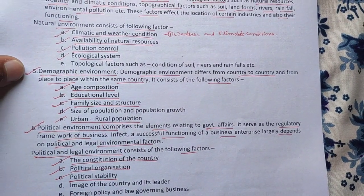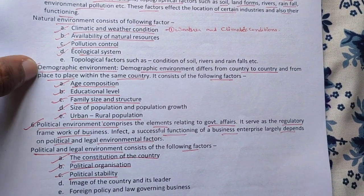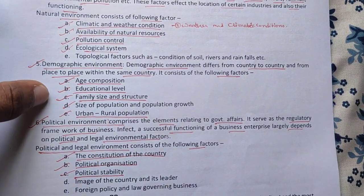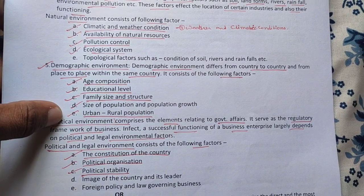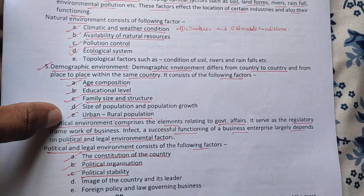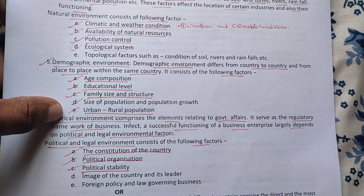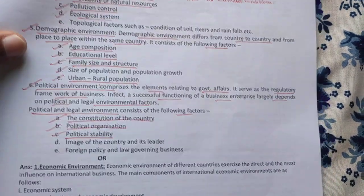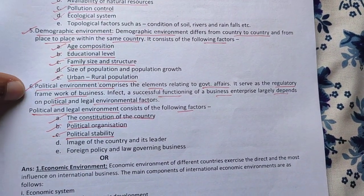The fifth is the demographic environment. Its factors include age composition, educational level, family size and structure, size of the population, population growth, and urban and rural population.